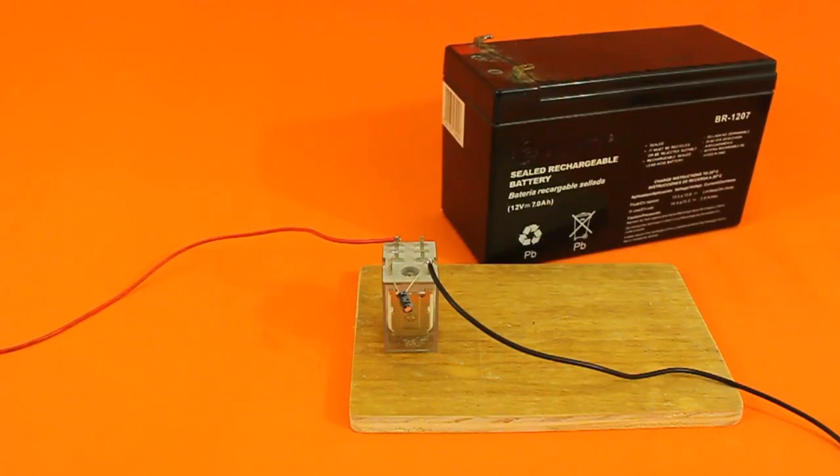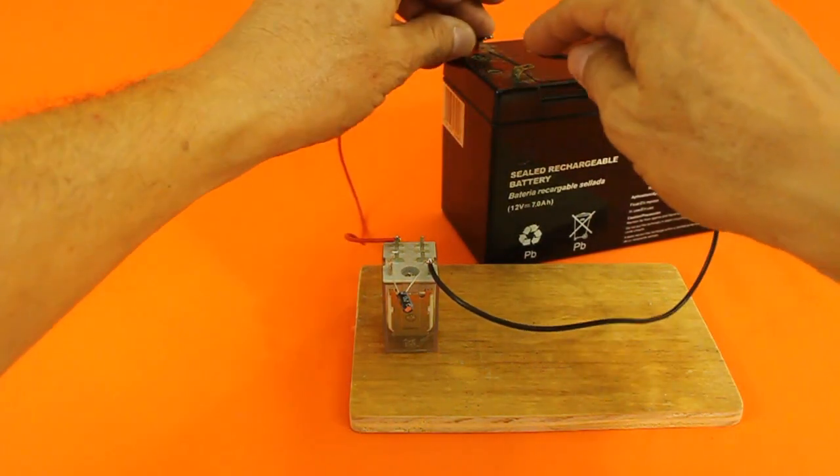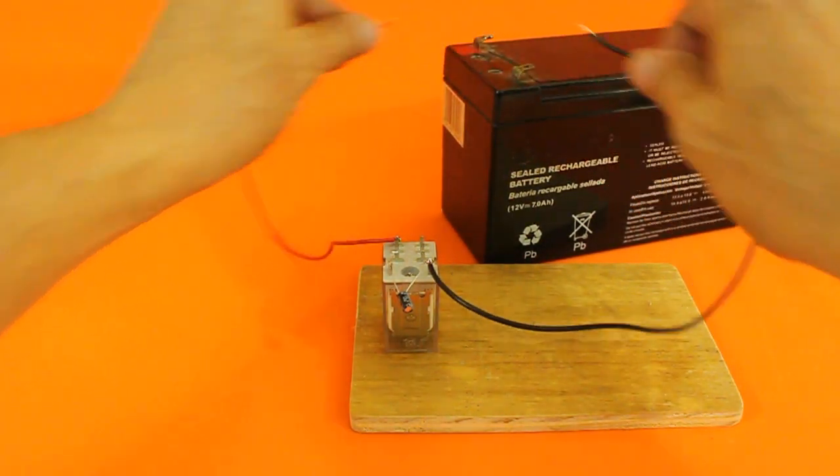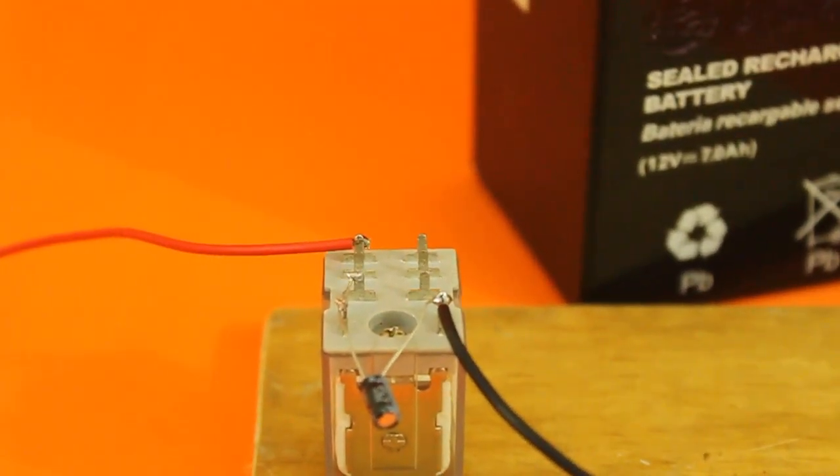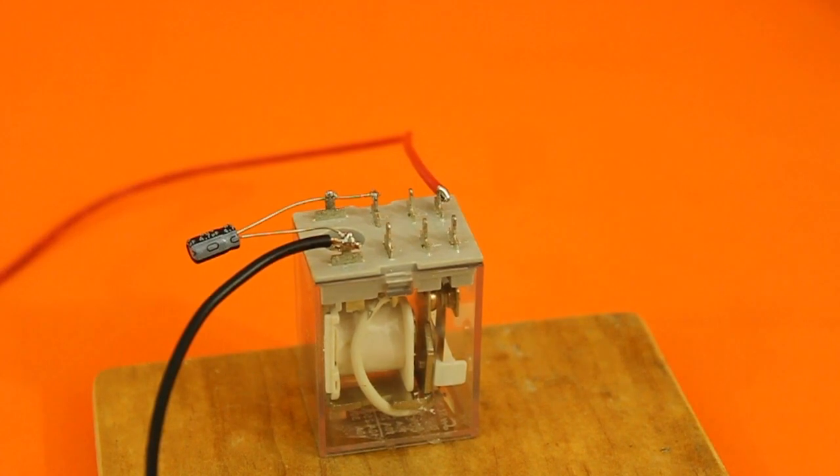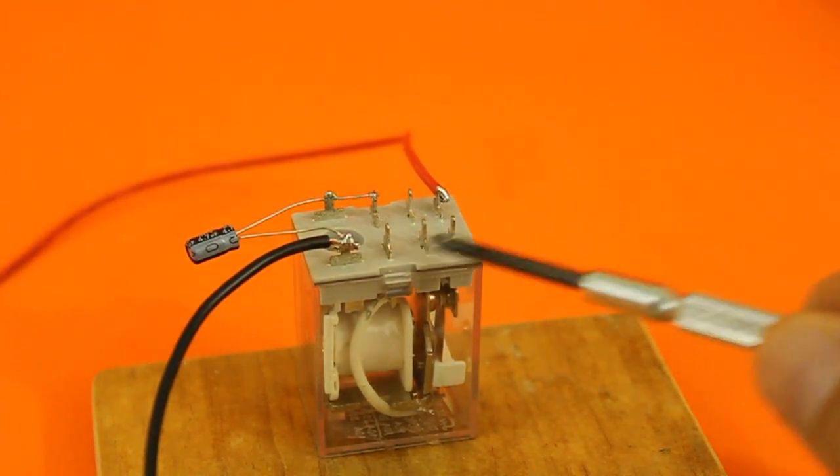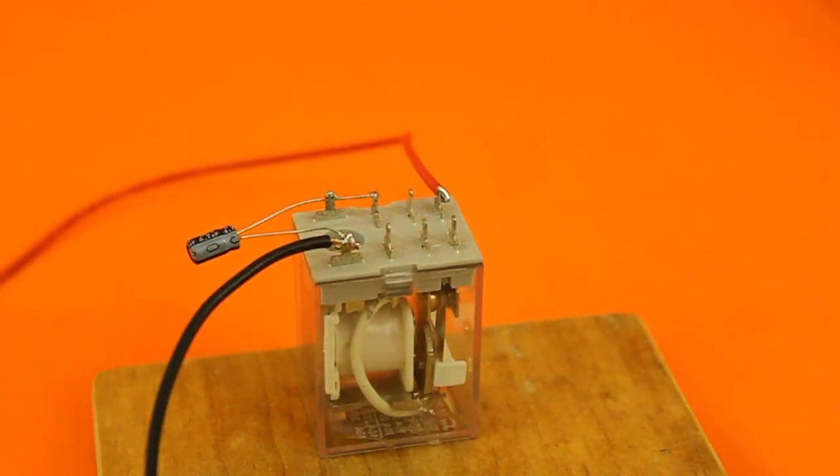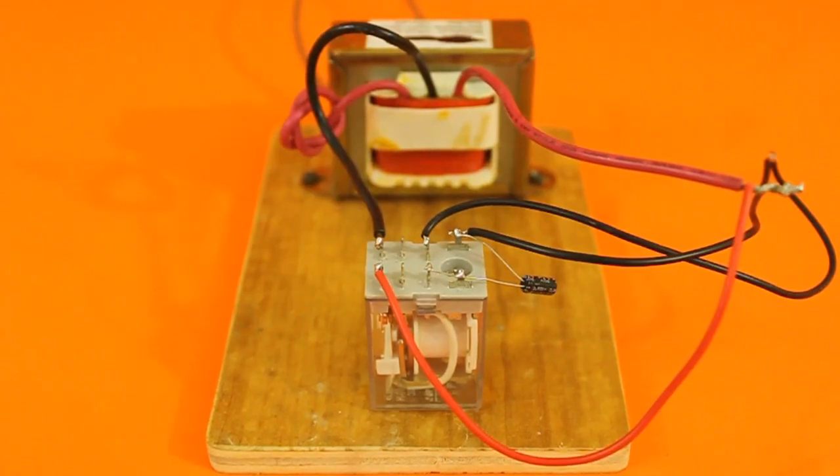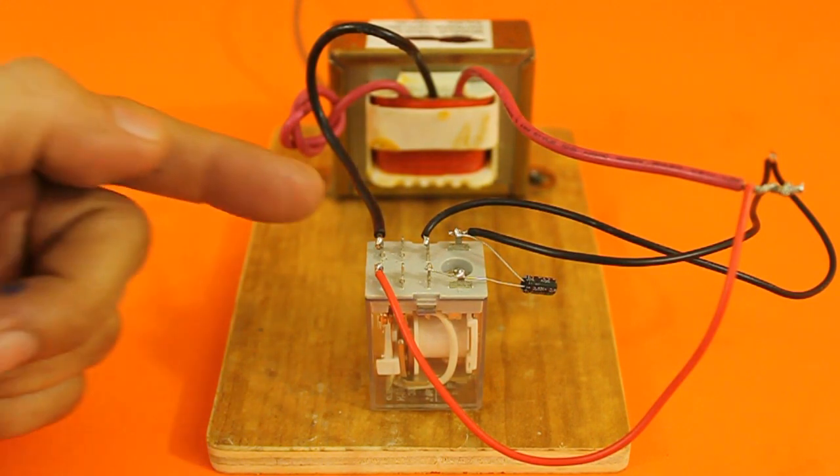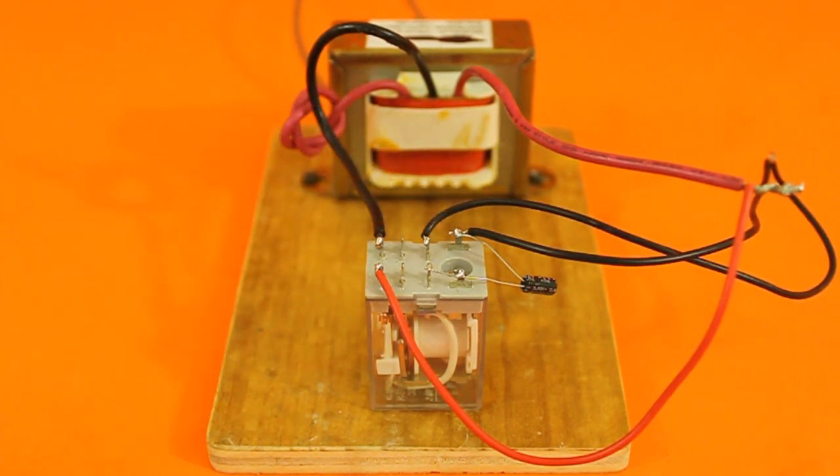I have connected the relay as oscillator with the capacitor. Now I am going to use the other set of terminals of the relay to connect the transformer. Let's see the connection of the transformer. We are using the other set of contacts of the relay.